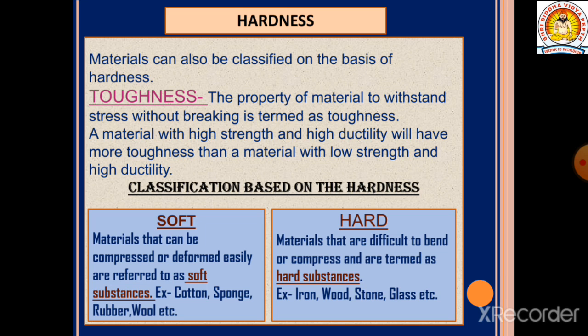Classification based on hardness: materials are classified as soft or hard. The material that can be compressed or deformed easily is referred to as a soft substance. Examples of soft substances are cotton, sponge, rubber, and wool. If we apply any stress or force on them, they will change their shape and size.